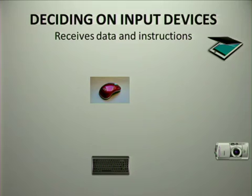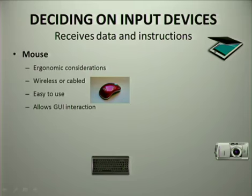There are different devices that you can choose from. These devices allow the computer to receive data and receive instructions. Now there are four pictures on screen. If you check the first one here, it's a mouse.